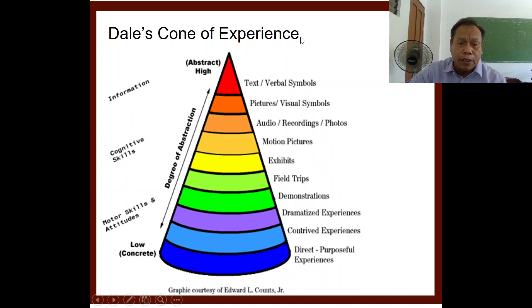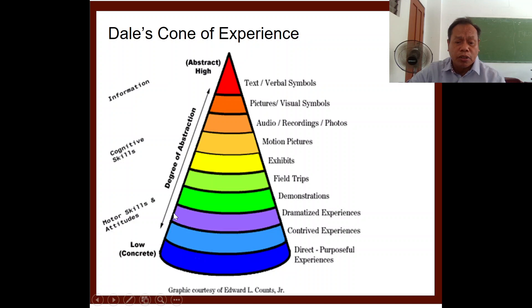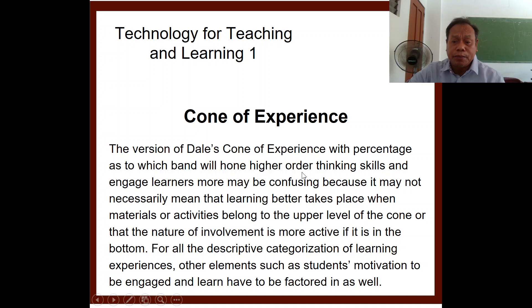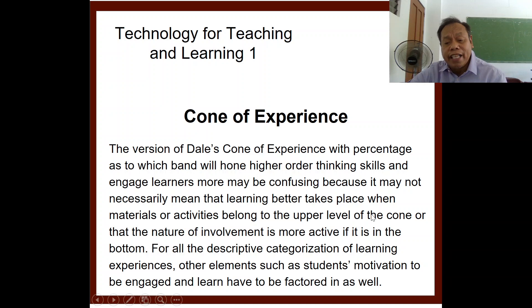This is what we call the cone of experience by Dale. Normally, there is a degree of abstraction when you teach a lesson. You start with the concrete and go to the abstract, beginning with direct purposeful experience, then motor skills and attitudes, then cognitive skills, before reaching information. The version of Dale's cone with labels as to which band will hone higher-order thinking skills may be confusing, because it may not necessarily mean that learning better takes place when materials or activities belong to the upper level of the cone, or that the nature of involvement is more active at the bottom.